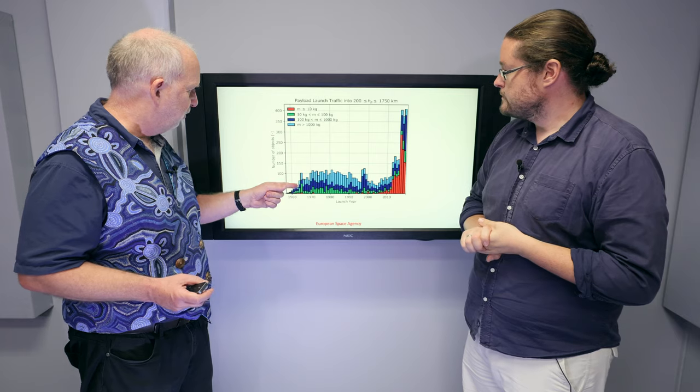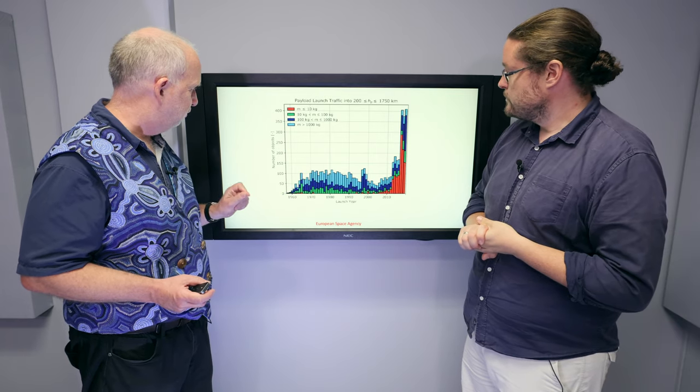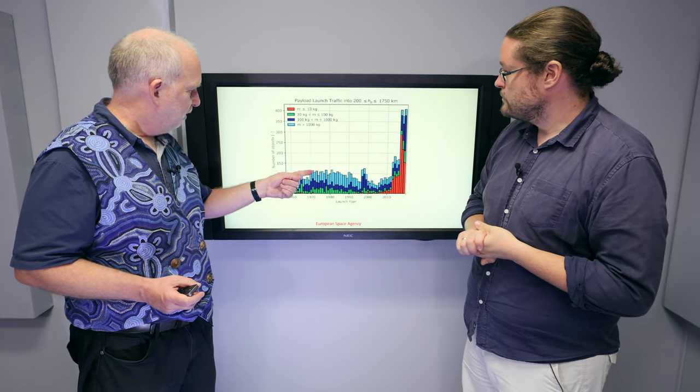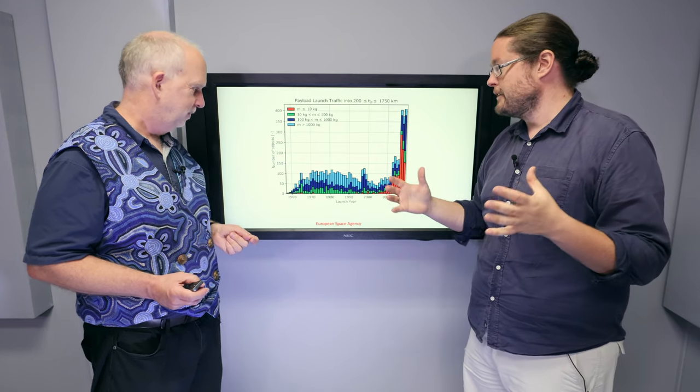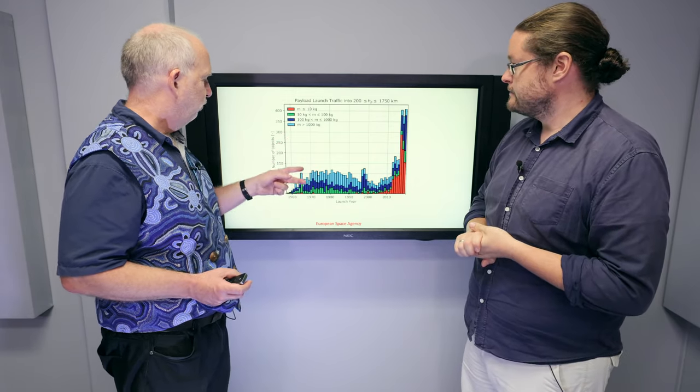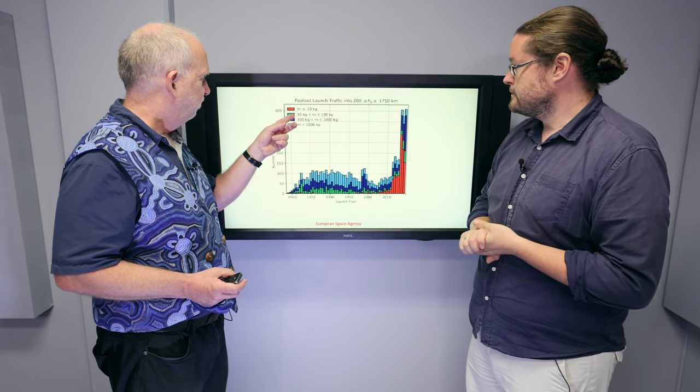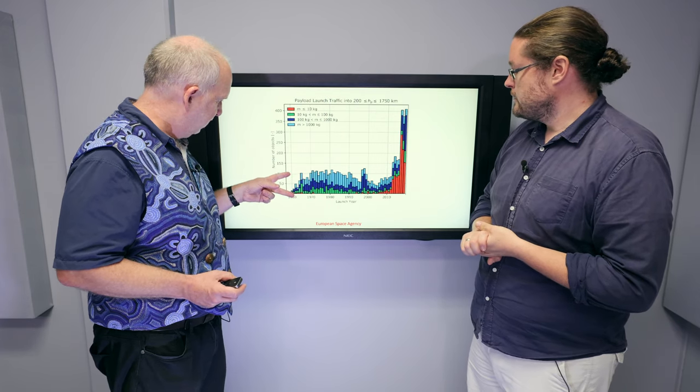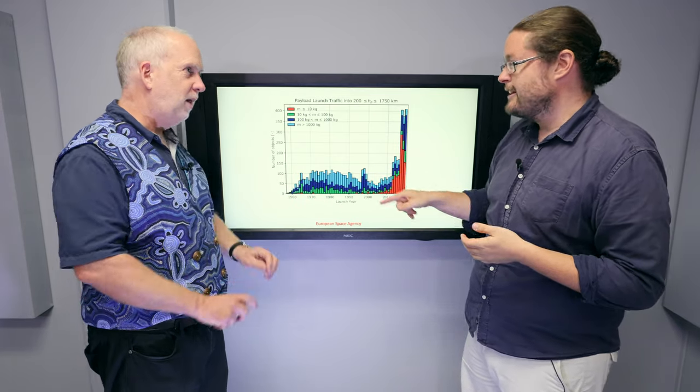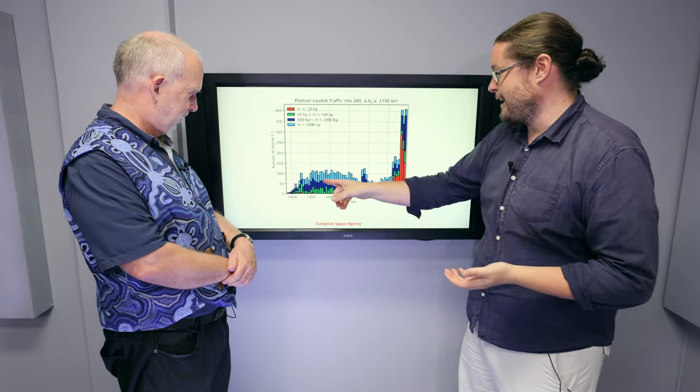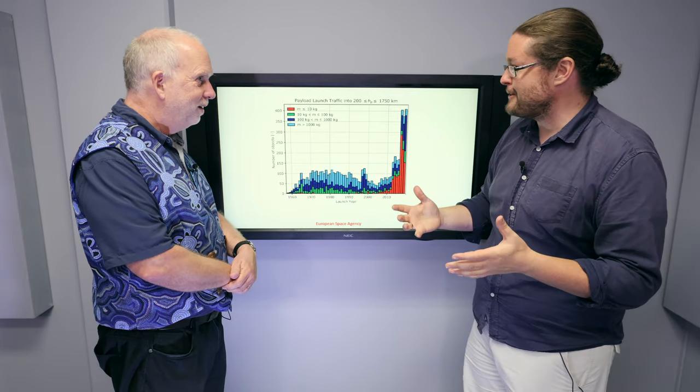What you can see is this is separated by the size of the spacecraft. The light blue is spacecraft that are more than a ton, more than 1,000 kilograms—the really big ones. Then the blue is 100 kilograms to 1,000. And then the small ones. For a long time, it was fairly stable and dominated mostly by these heavy ones. That was because electronics in the 70s were a lot bigger and heavier than they are today.